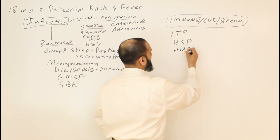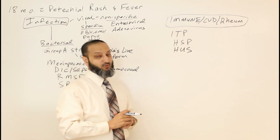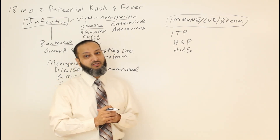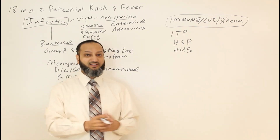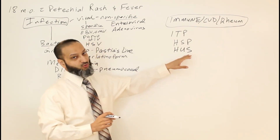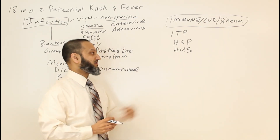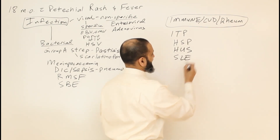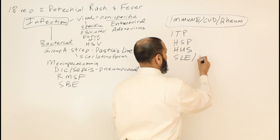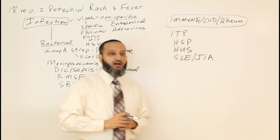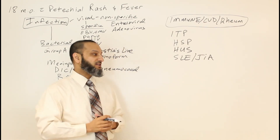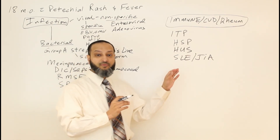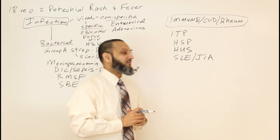Another entity is HUS — hemolytic uremic syndrome — which gives you hemolytic anemia, uremia, and thrombocytopenia, typically after bacterial gastroenteritis with E. coli or another bacterial cause. You can get petechiae from the thrombocytopenia, along with hemolytic anemia and uremia. Also think about collagen vascular diseases like lupus and JIA, which can cause thrombocytopenia through autoimmune-mediated hematologic responses. There is a family history of lupus in this patient, so that is something to consider.